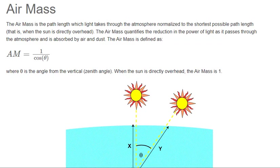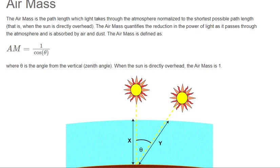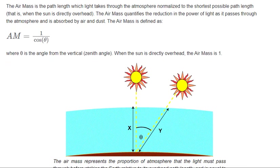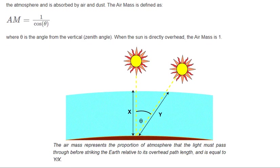The air mass is the path length which light takes through the atmosphere normalized to the shortest possible path length, that is, when the sun is directly overhead. The air mass quantifies the reduction in the power of light as it passes through the atmosphere and is absorbed by air and dust. The air mass is defined as...